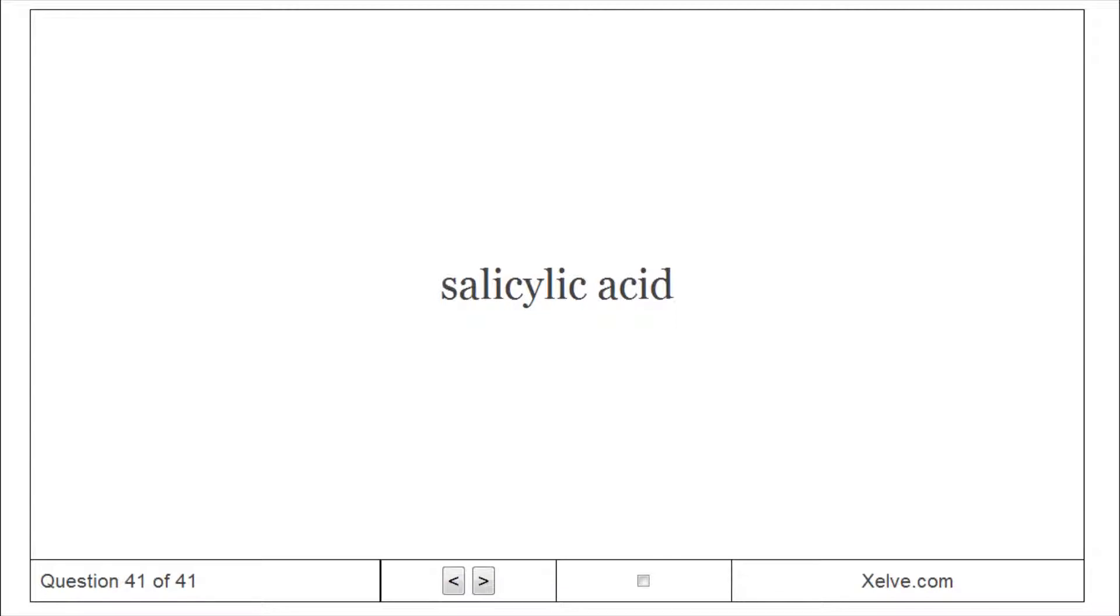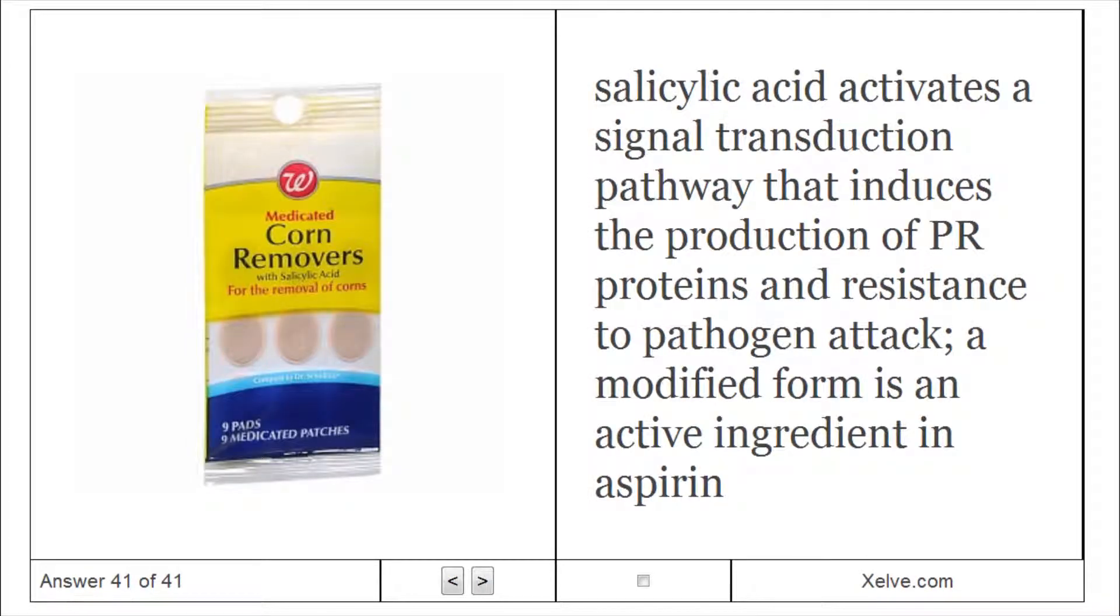Salicylic acid: activates a signal transduction pathway that induces the production of PR proteins and resistance to pathogen attack. A modified form is an active ingredient in aspirin.